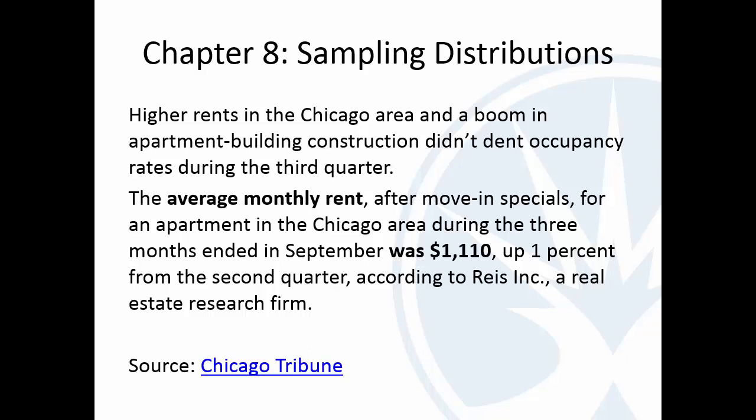I've got one here from the Chicago Tribune, talking about average monthly rents, and they calculated this average monthly rent to be about $1,100. Now, that's got to be from a sample of apartment rents. They didn't look at every single apartment in Chicago to get that. So the question is, how accurate is it? Is it plus or minus $100, plus or minus $10? What is the typical average monthly rent going to be if we know what all the rents are?